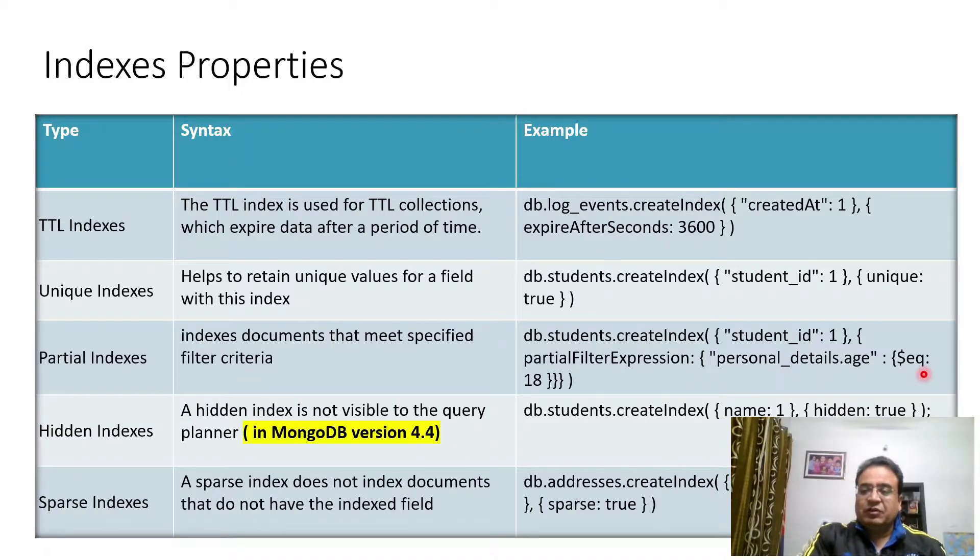Only those fields which are matching with this criteria will be having an index. So in case we run a query based upon this parameter where student ID as well as personal detail dot age is there, this index will be used.